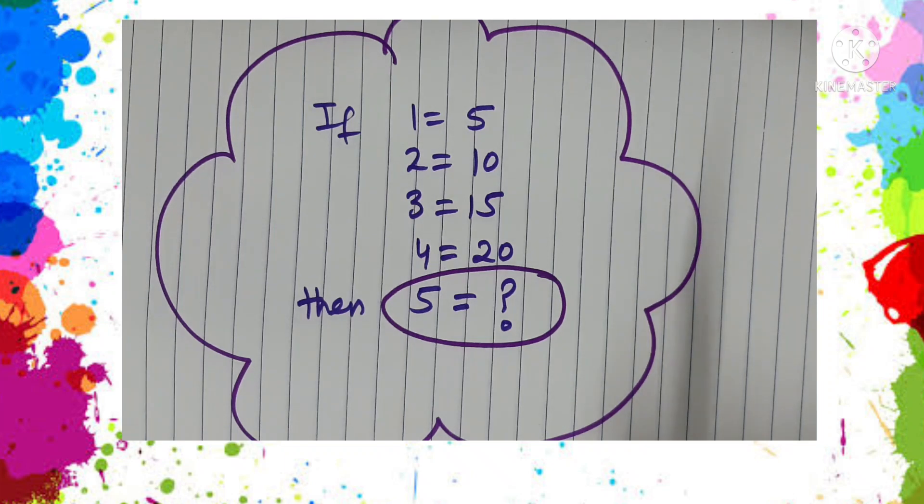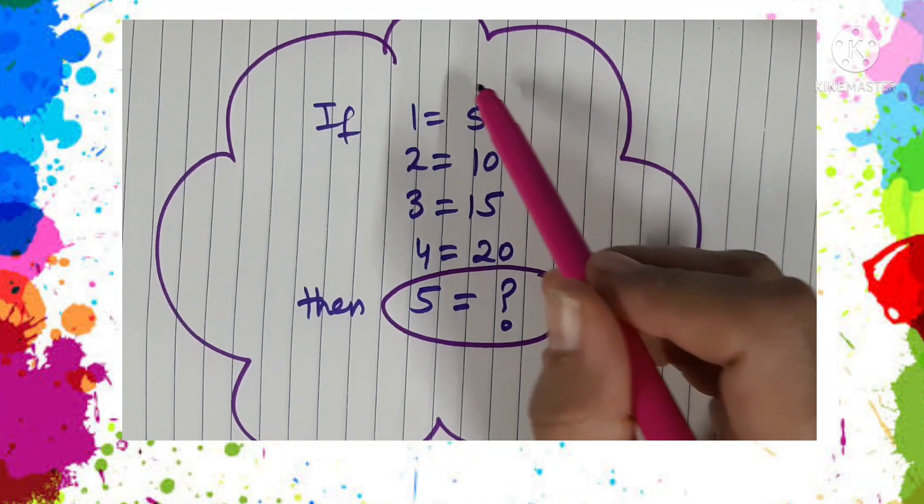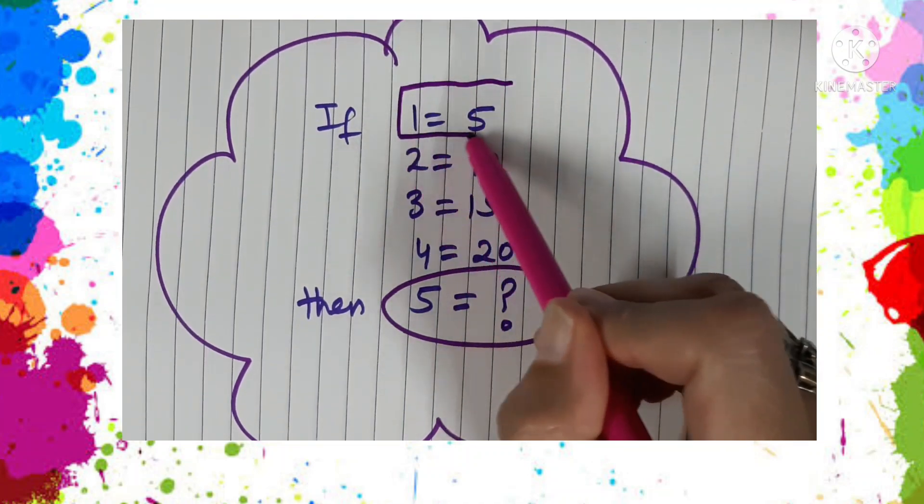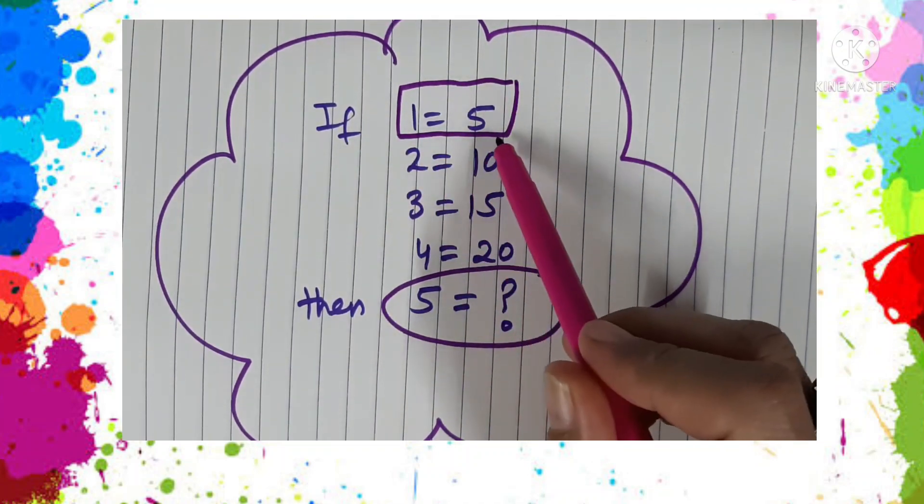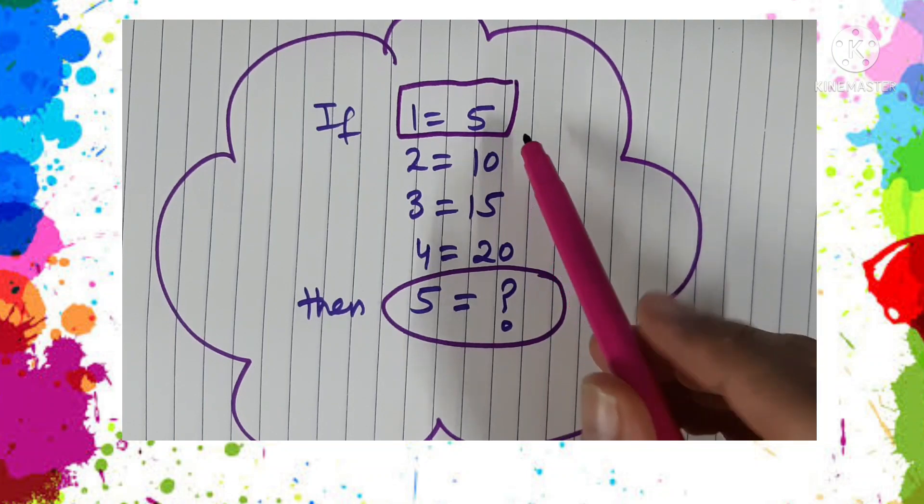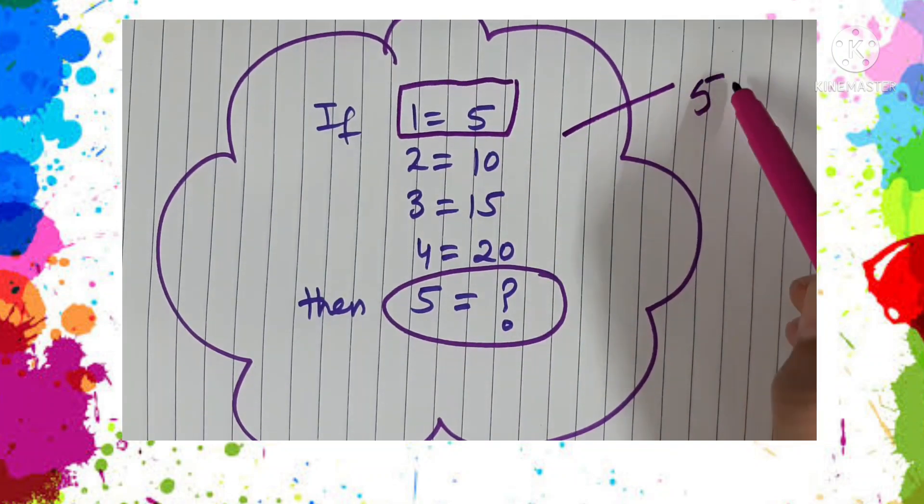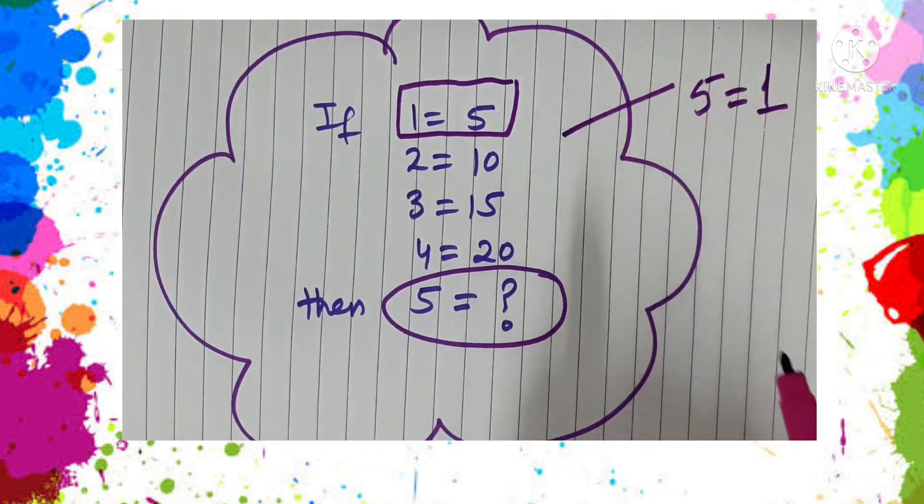I hope you are trying. Okay, so quickly we see that here in this setup, we are given 1 is equal to 5. That means 5 is equal to 1.